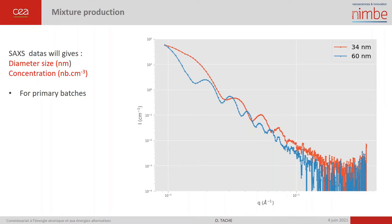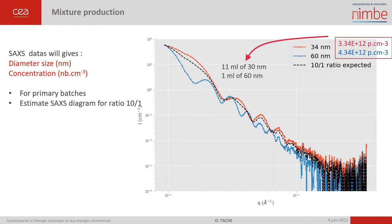For the mixture production, we need to carefully measure the concentration of each batch. For this purpose, we use the protocol established in the lab for sample preparation, acquisition, and software analysis. Here you have the two size distribution diagrams of the primary batch, which give us the proportions to use, and we can estimate the SAXS signal of the mixture.